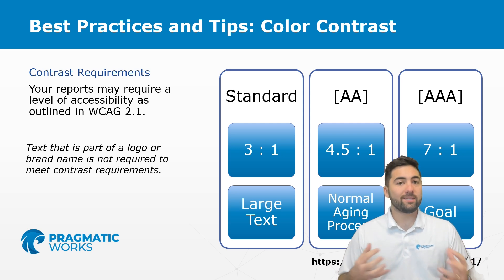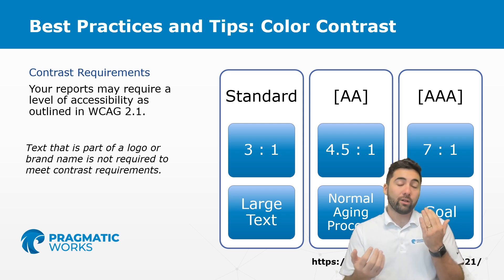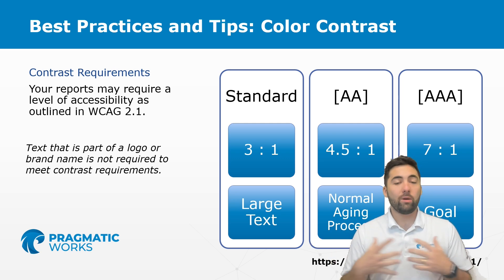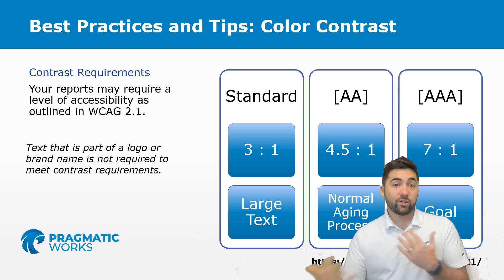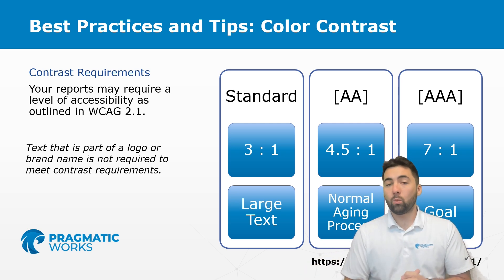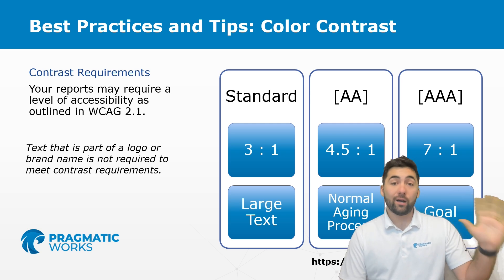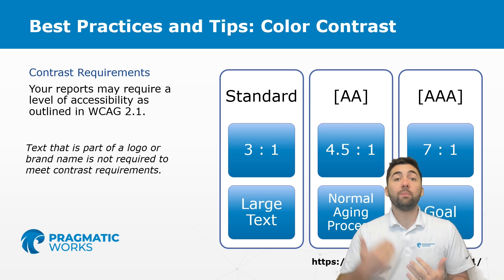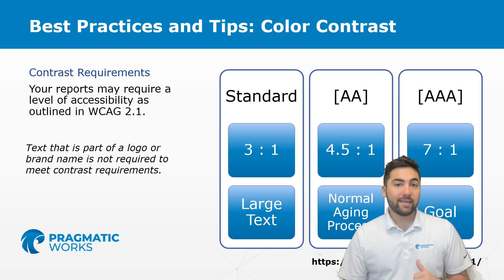Color contrast is essentially the difference between the background color and the text color. These numbers represent the ratio of that contrast. If you've ever seen on a website something called high contrast views, that is just upping the level of contrast. With high contrast, we tend to see things a bit more visibly.